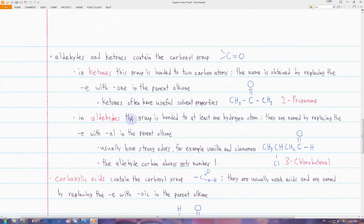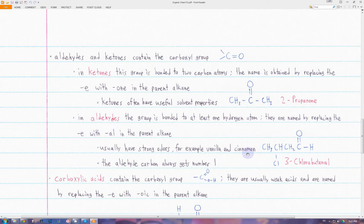Then we have aldehydes, in which the carbonyl group is bonded to at least one hydrogen atom. We name them by replacing the E in the alkane with AL. For example, this aldehyde is based on butane since it has four carbons in a row. Notice how the double bond to oxygen and the hydrogen are always going to be at the end of a chain. For aldehydes, we do not have to specify the position of the double bond O.